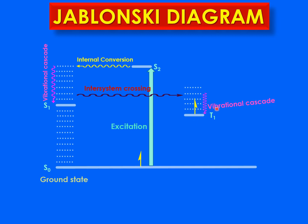From the lowest vibrational level of T1, the electron jumps to S0. Since it is going from a triplet state T1 to a singlet state S0, its spin must change again. This process of the electron jumping from T1 to S0 with inversion of spin, emitting energy in the form of light, is known as phosphorescence. The electron has now returned to the S0 ground state.